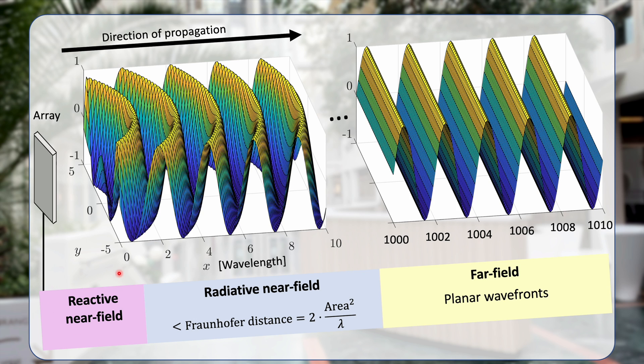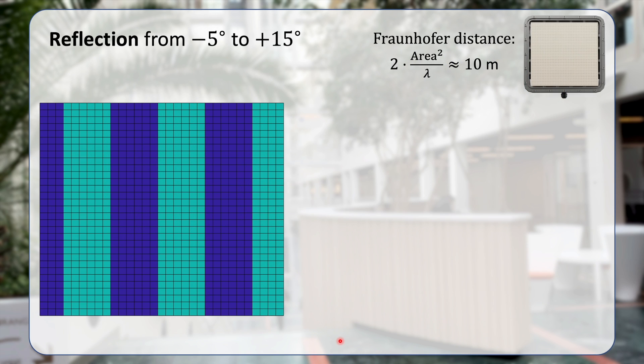Very close to the array, we have something called the reactive near field that is utilized with RFID tags. But in our scenario, we have something called the radiative near field where we can still see some of the curvature when the signal is reaching the RIS. We are in the radiative near field at distances smaller than the Fraunhofer distance, which is computed in this formula that depends on the area of the RIS and the wavelength. In our case, the Fraunhofer distance is 10 meters.